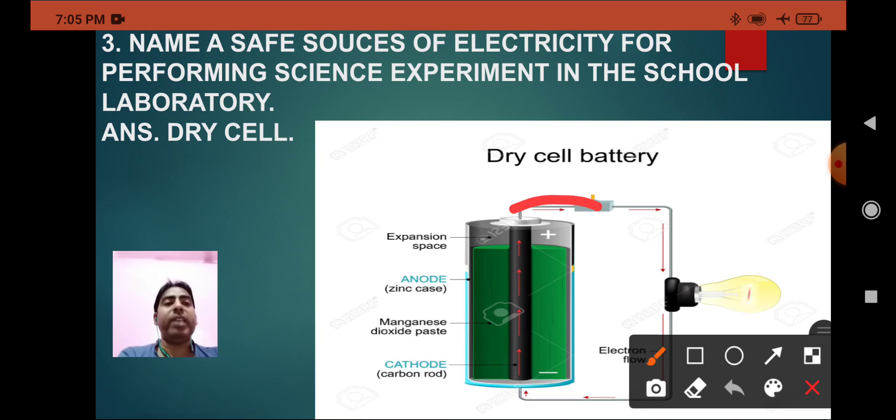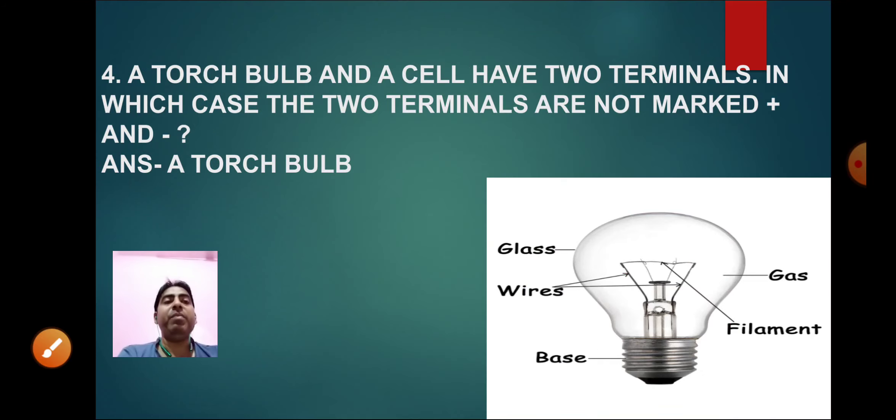The dry cell contains positive terminal and negative terminal, but what happens in the bulb? You will not see the positive and negative terminals, so the answer will be torch bulb.